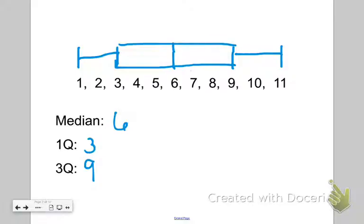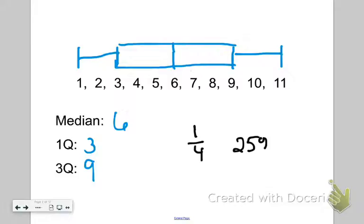They make the whiskers of my box and whisker plot. Pretty simple. What's really cool about box and whisker plots is they also show percentages. Think about this — your median, your first quartile, your third quartile, what they do is they break up your data into four parts, four sections — fourths, also known as quarters. Because of that, you have quarter sections, or another way to look at it is the 25% sections.